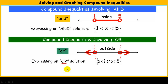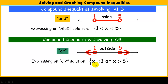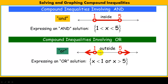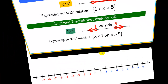An OR solution set must — and I have to emphasize this — must include the word OR. The solutions are all x's that are less than one, going this way, or the x's can be greater than five, over here. That number nine would be a solution because it is greater than five, even though it's not less than one — it just has to satisfy one of the two. An example that wouldn't satisfy anything would be two: it's not less than one, and it's also not greater than five, so it would not be in the solution set.